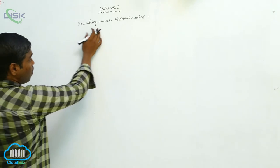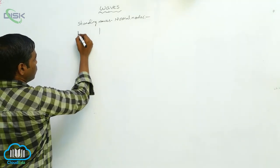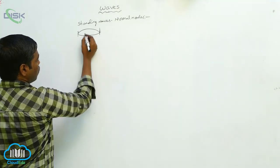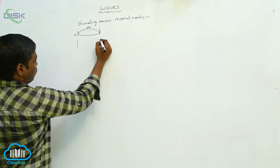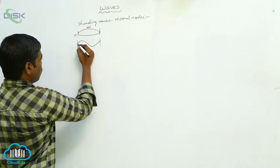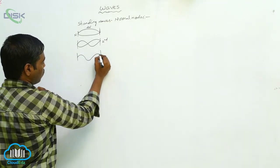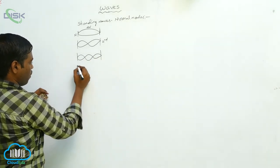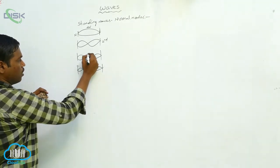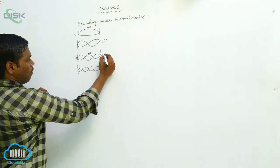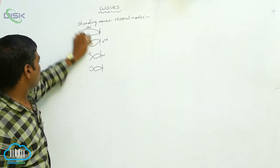For the closed end — where one end is open and another end is closed — the harmonics produced include the first harmonic, second harmonic, third harmonic, and fourth harmonic, where these are the antinodes and these are the nodes. These are the harmonics at both open ends.